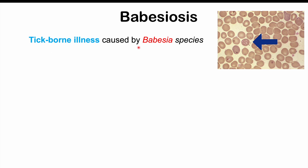Babesiosis is a tick-borne illness caused by Babesia species. It is caused by a parasitic protozoa — not a bacteria. A common species, especially in the United States, is Babesia microti. Some other species include Babesia duncanii and some others as well.